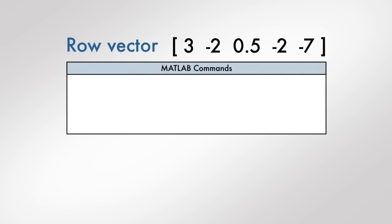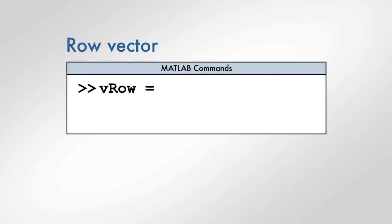To create a row vector and store it in a MATLAB variable, start by entering the variable name followed by an equal sign. Begin the vector with a left square bracket followed by the numbers. Note that the successive numbers in a row vector are separated by commas. When you are finished entering numbers in the vector, identify the end of the vector with a right square bracket.